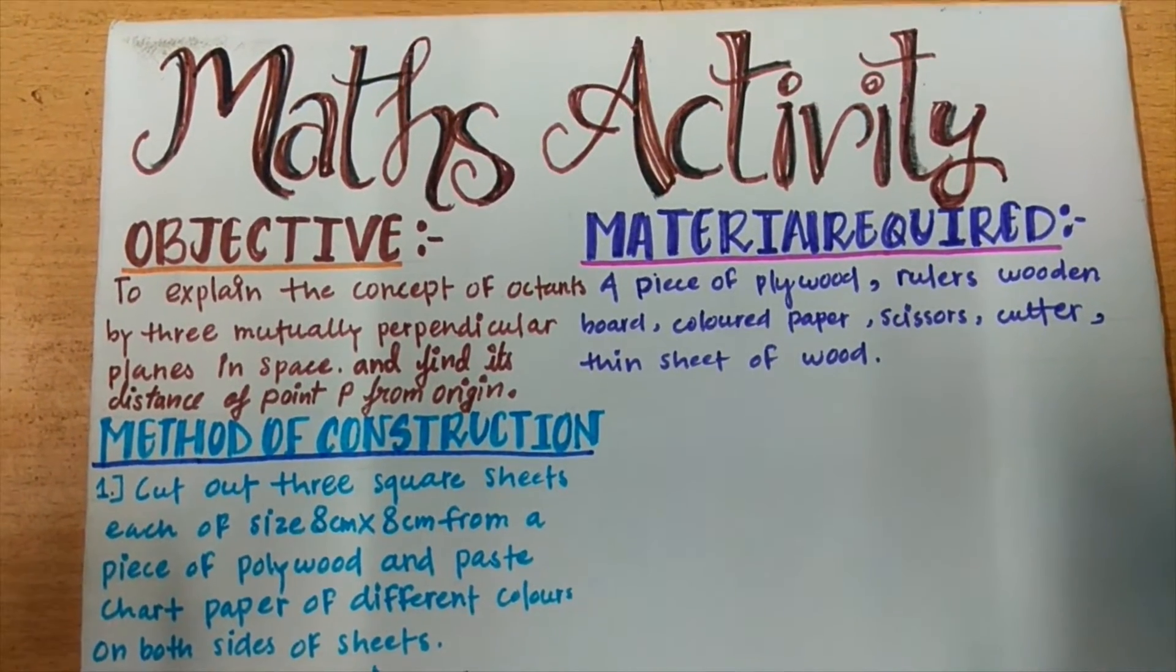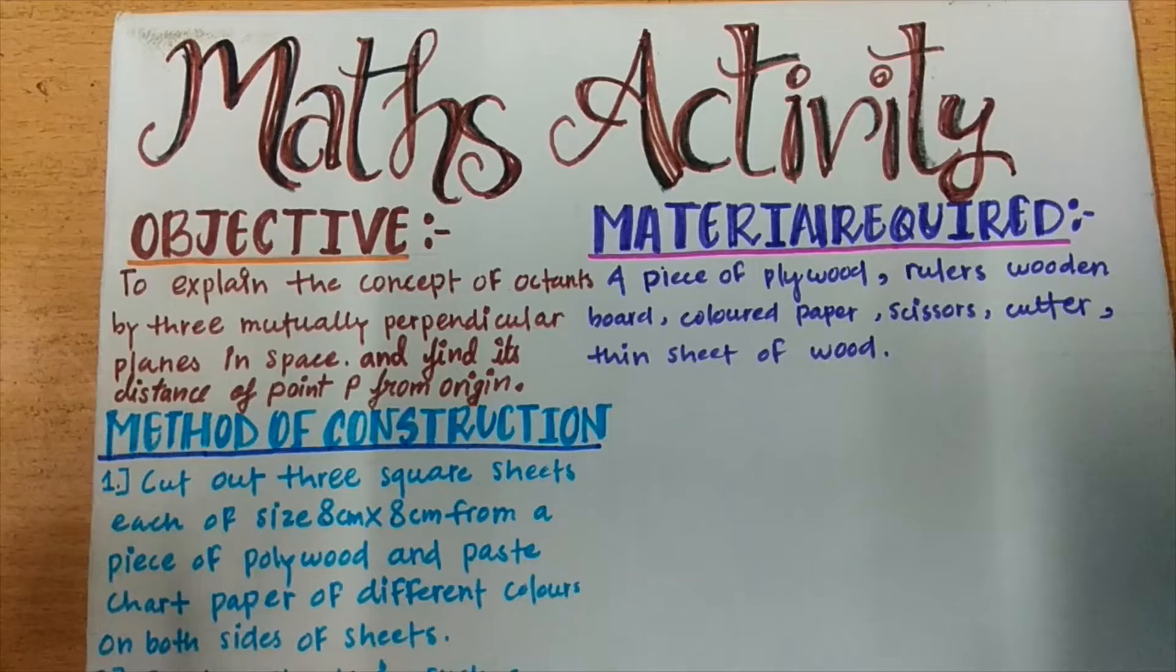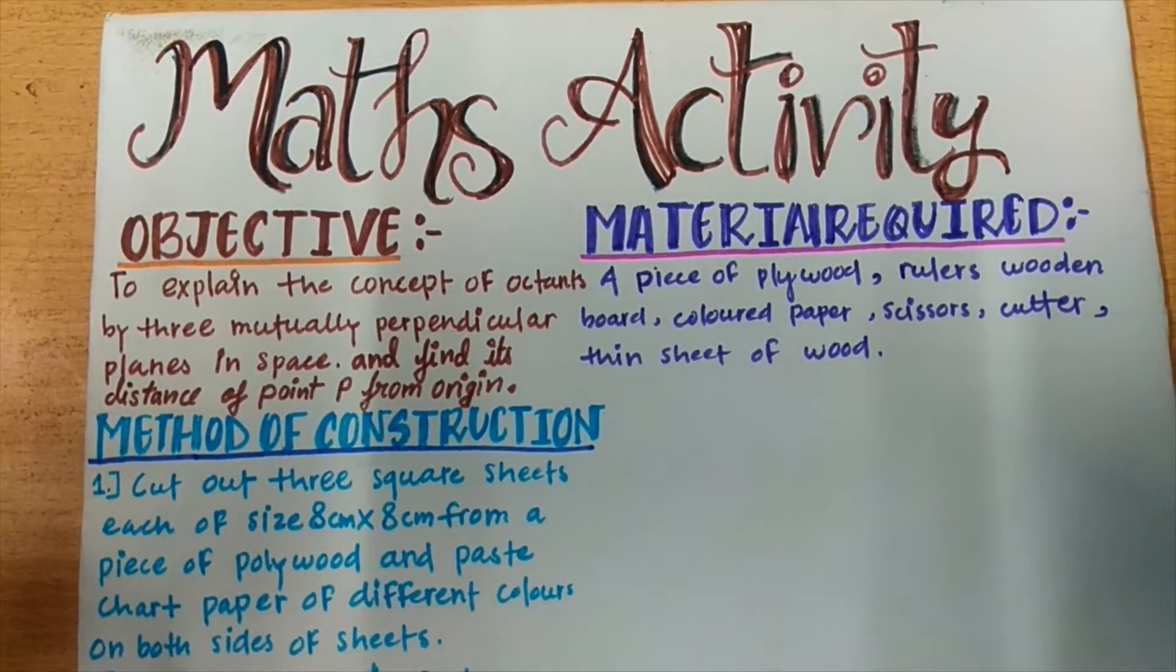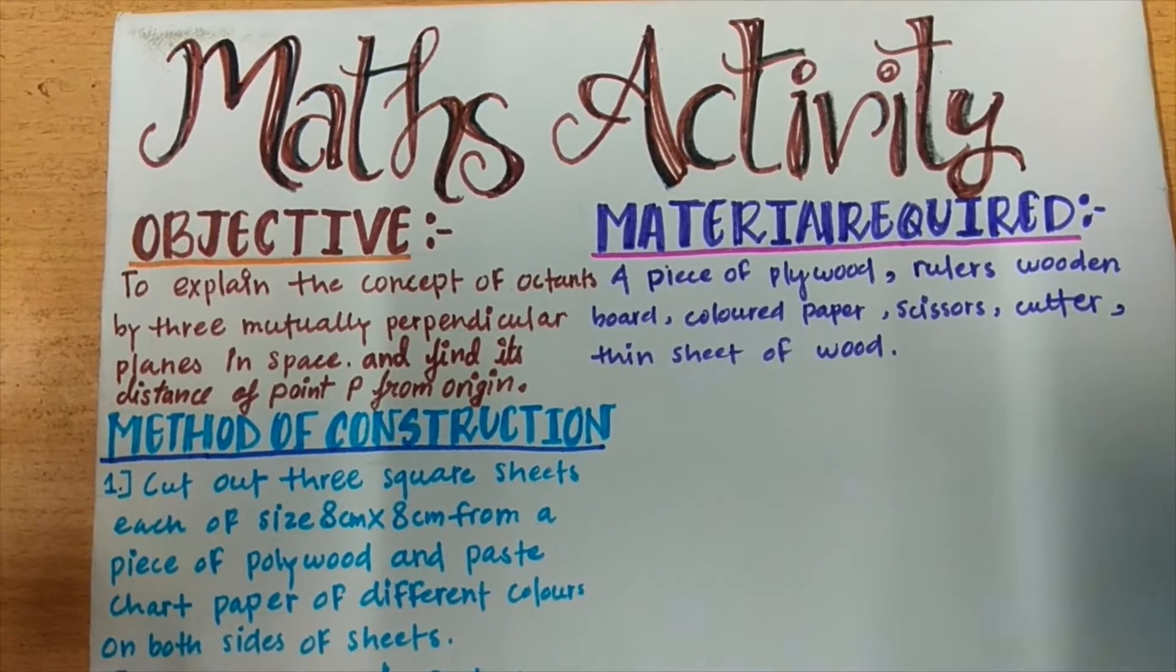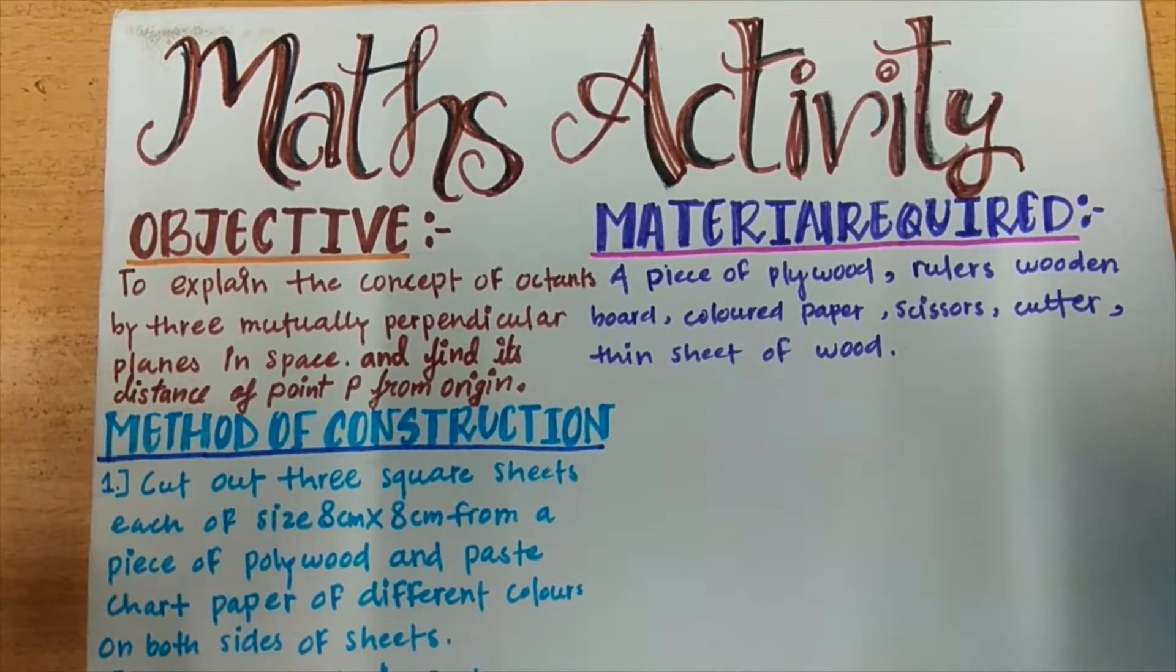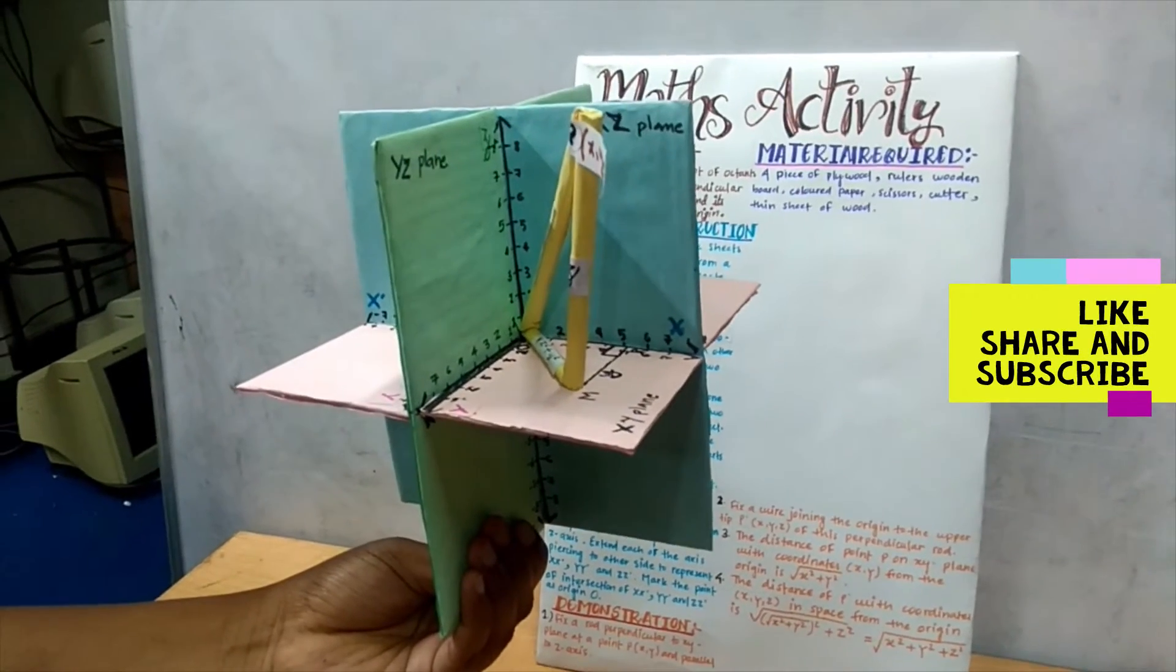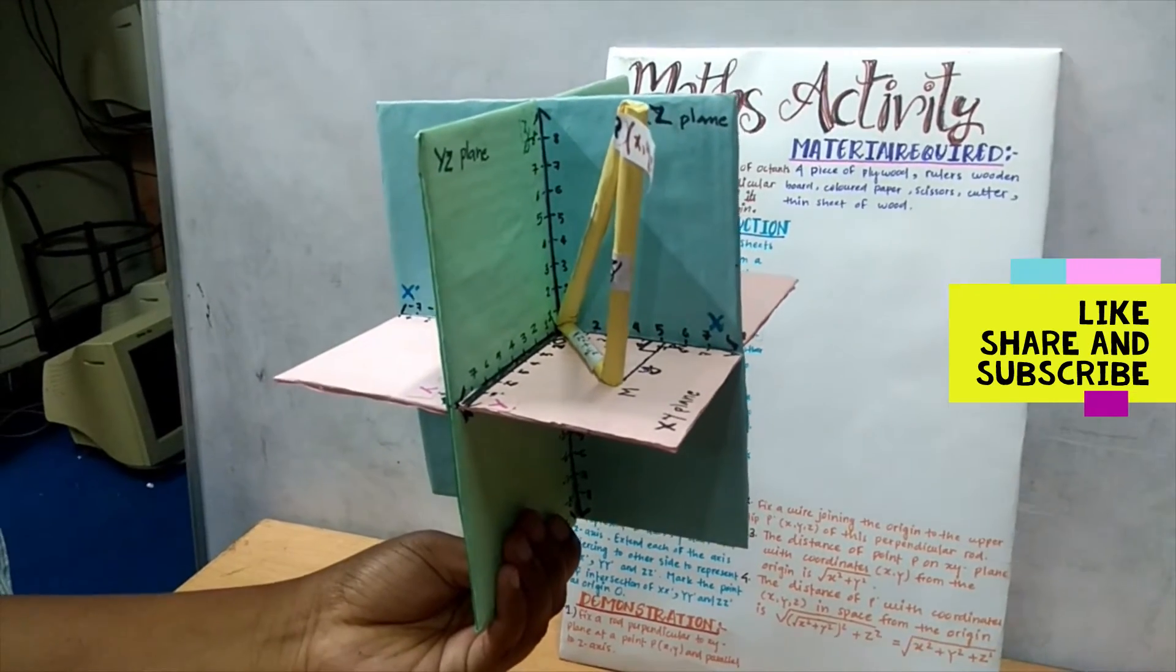The objective of this activity is to explain the concept of octants by three mutually perpendicular planes in space and find its distance of point B from octant. In this activity, first discuss about octant.